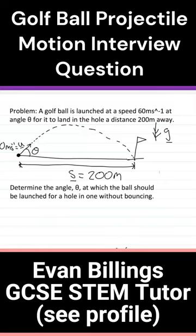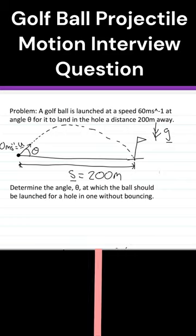A golf ball is launched at a speed of 60 meters per second at an angle theta from the horizontal for it to land in the putting hole a distance 200 meters away. We need to determine the angle at which the ball should be launched for a hole in one without bouncing.